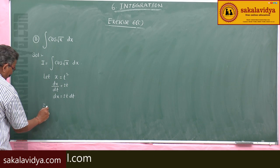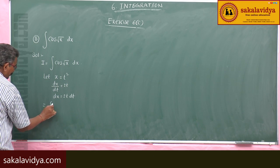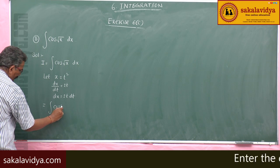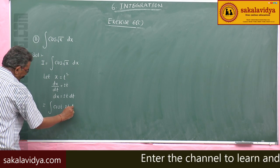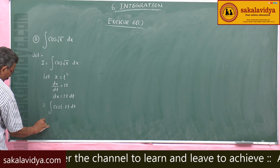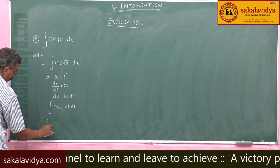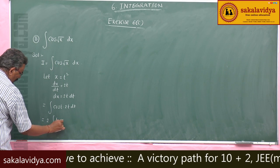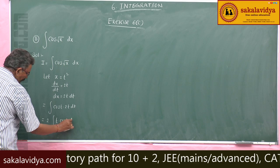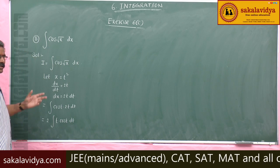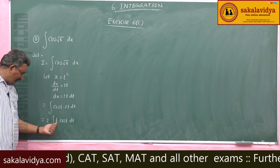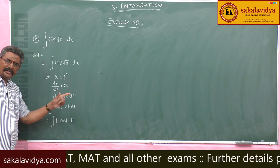This becomes integral of cos(t) · 2t dt. Taking 2 out: 2 integral of t·cos(t) dt. Now, using the LIATE rule, t is the algebraic first function and cos(t) is the second function.